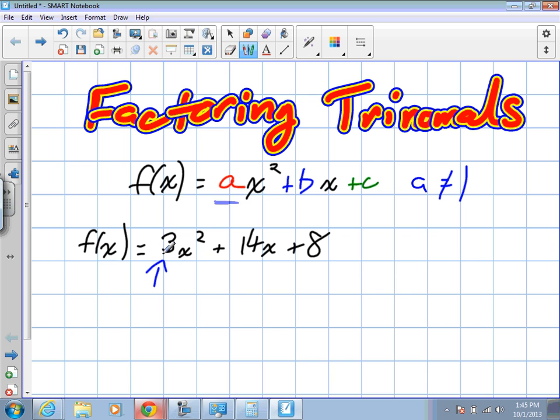So in this case we have 3. So the first set of factoring, actually I shouldn't have said that, a is, well I've said it, is 3. What's our b in this case? 14. Positive 14. And what's our c? 8. Good, this is very important for what we're about to do.